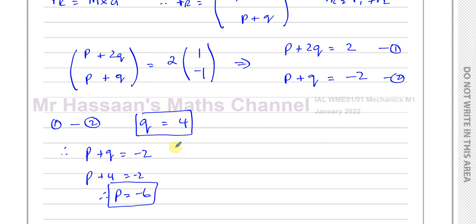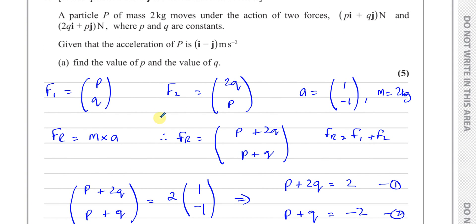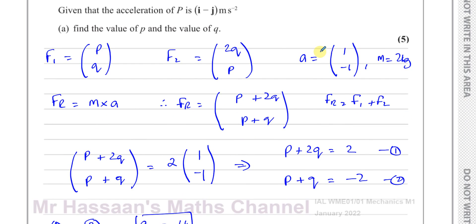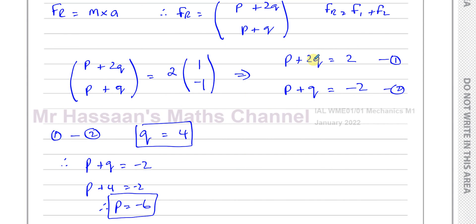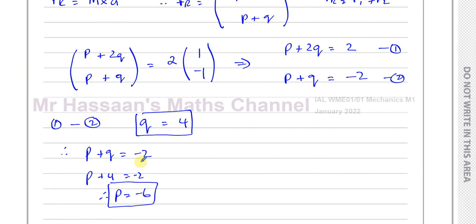So the values are p = −6 and q = 4. That's the answer to part a. Now we move on to part b.